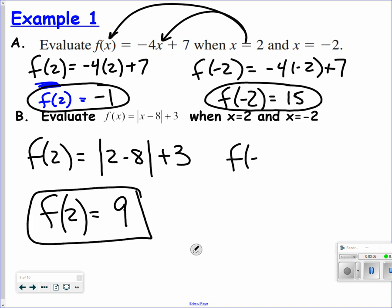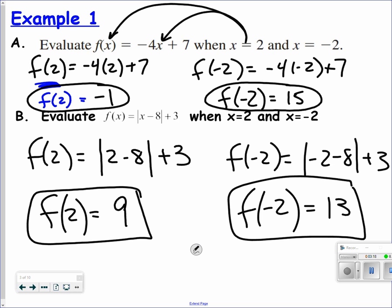How about f of negative 2? Negative 2 minus 8 is negative 10. The absolute value is 10 plus 3 would be 13. So it's a little bit of a notational thing today, more than anything else.